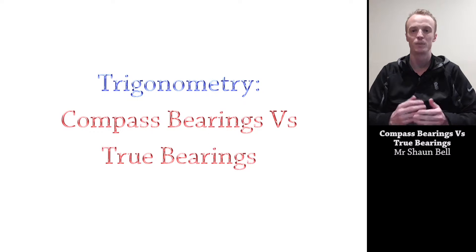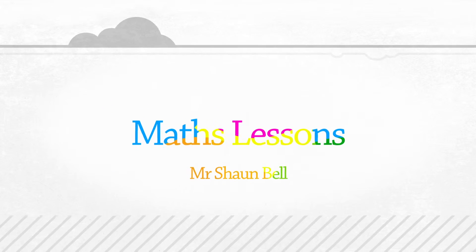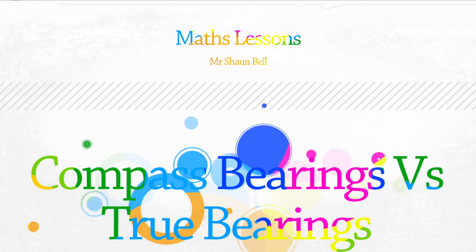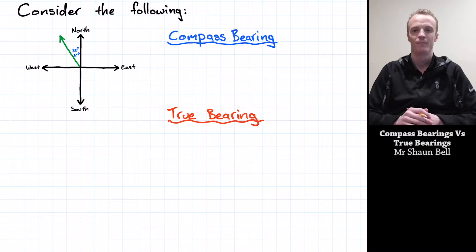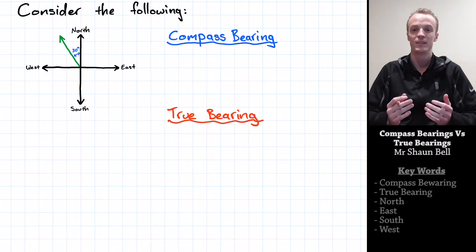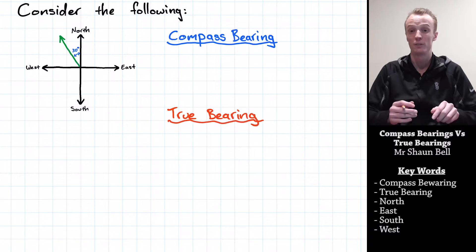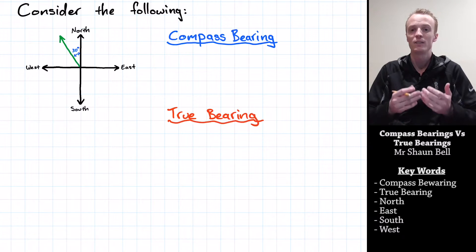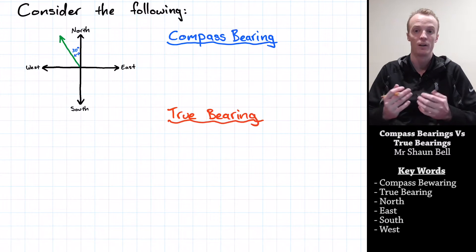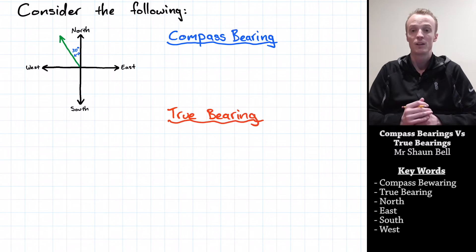Today we're going to discuss the differences between compass bearings and true bearings and look at how we find each. To get started, consider if we're walking in a direction on our compass 30 degrees from North and we need to describe that direction to someone else. There are two ways to describe the direction we're travelling: compass bearings and true bearings.